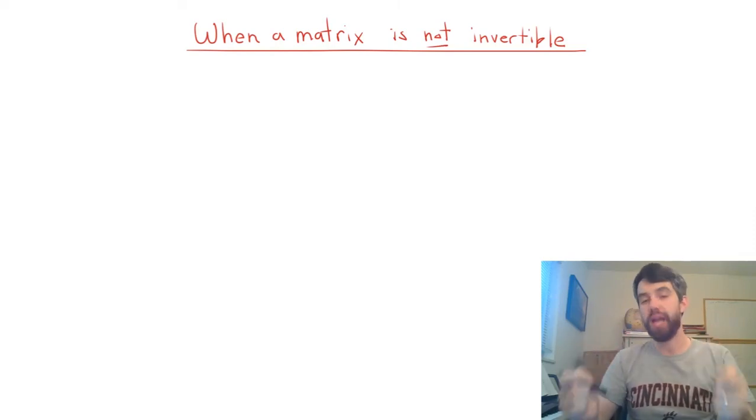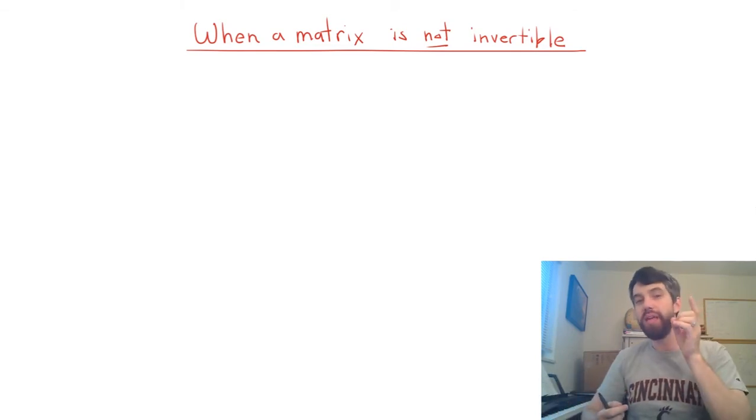We've seen that it is really nice to have an invertible matrix, because if A is invertible, any linear system Ax equal to B for any constant B is going to have a unique solution.